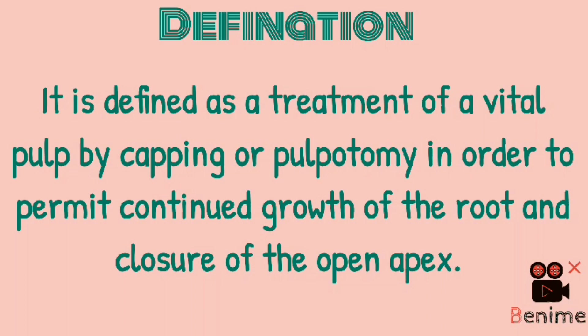How does this growth occur? This growth occurs by sustaining Hertwig's epithelial root sheath, which allows continuous development of the root length and a favorable crown-root ratio.